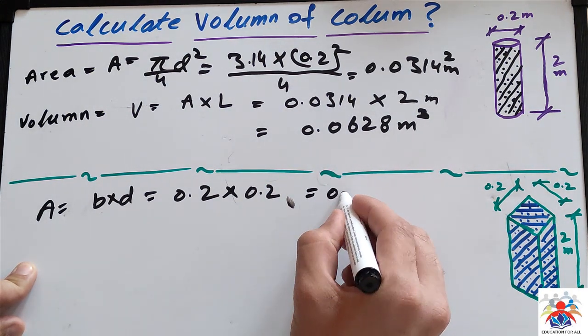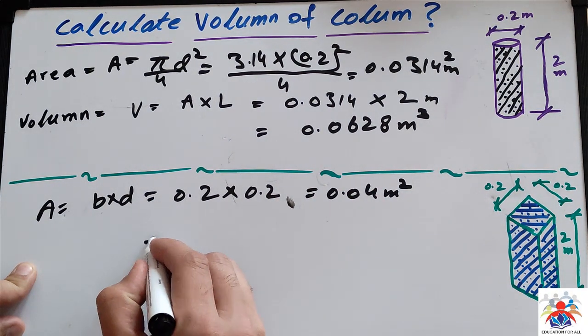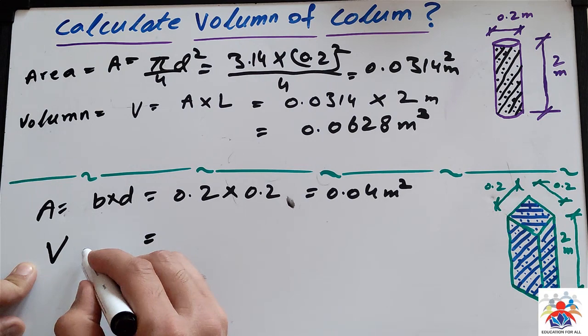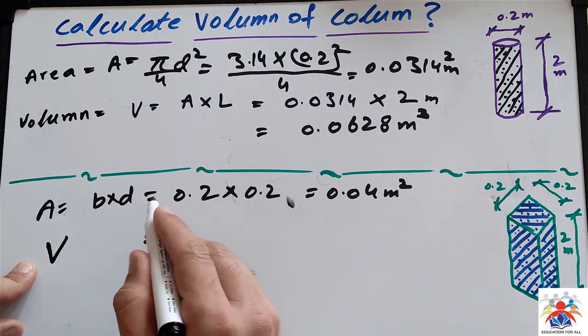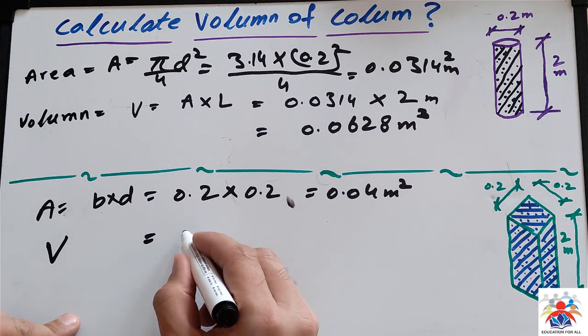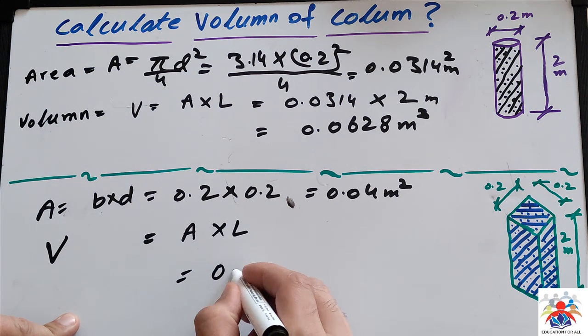Now we calculate the volume. As you can see in the above example, the formula for volume equals area multiplied by length. In our case, we have an area of 0.04 m².